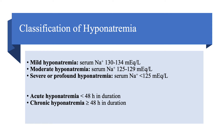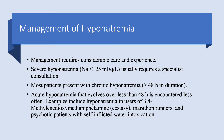Hyponatremia can be mild, moderate, or severe. Mild is sodium 130 to 134 mEq/L — normal sodium is 135 to 145. Moderate hyponatremia is serum sodium 125 to 129, while severe or profound hyponatremia is serum sodium less than 125 mEq/L. Hyponatremia can also be acute or chronic: acute when it's less than 48 hours in duration, chronic when it's 48 hours or longer.